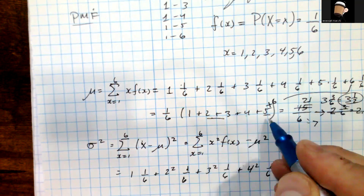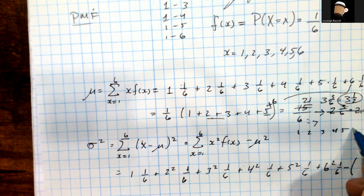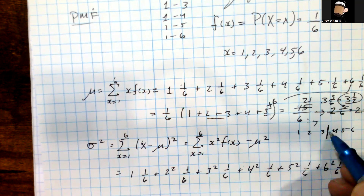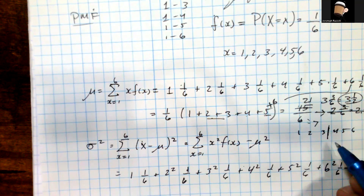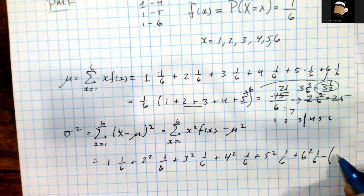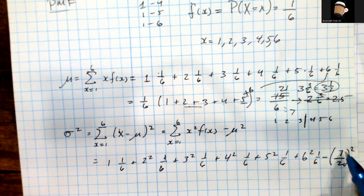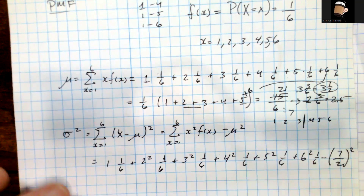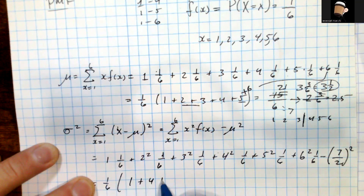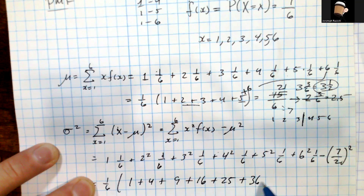Yes, 3.5 is exactly what we should expect — 1, 2, 3, 4, 5, 6, so the middle of that range is the mean. That's exactly right. The mean is 7 over 2, which is 3.5. Now let's go back to the variance calculation and factor out that 1/6 again. We have (1/6) times (1 + 4 + 9 + 16 + 25 + 36) — and I'm not going to forget the 36 this time — minus (49/4).